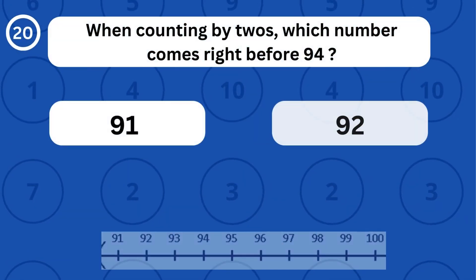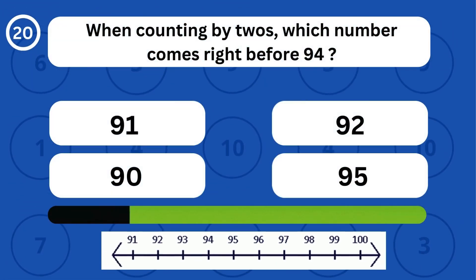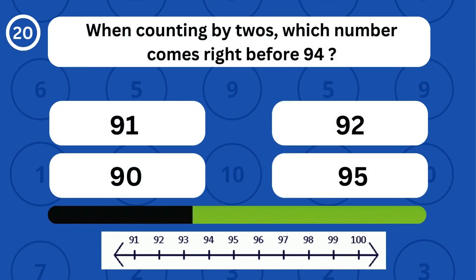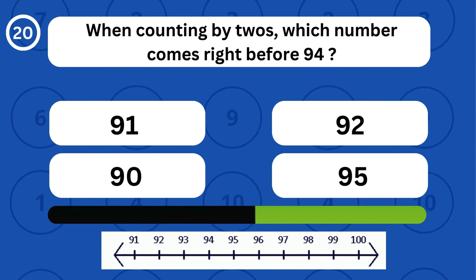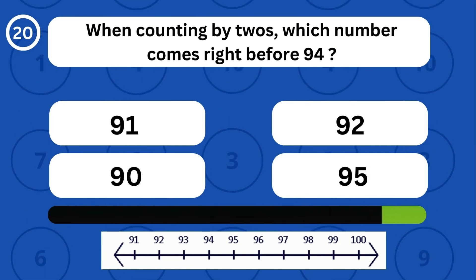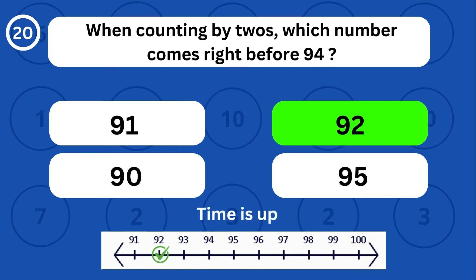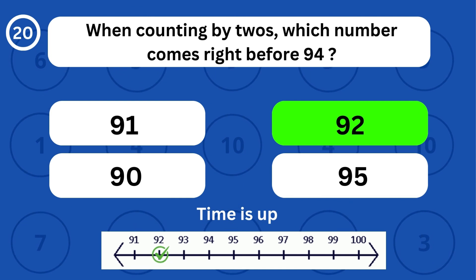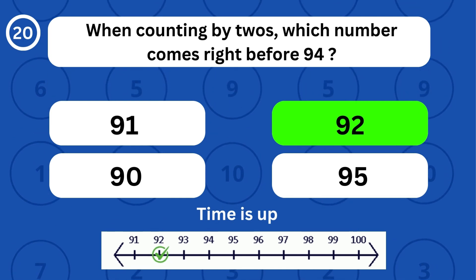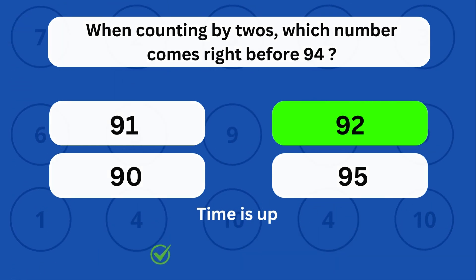When counting by twos, which number comes right before 94? When counting by twos, the number 92 comes right before 94.